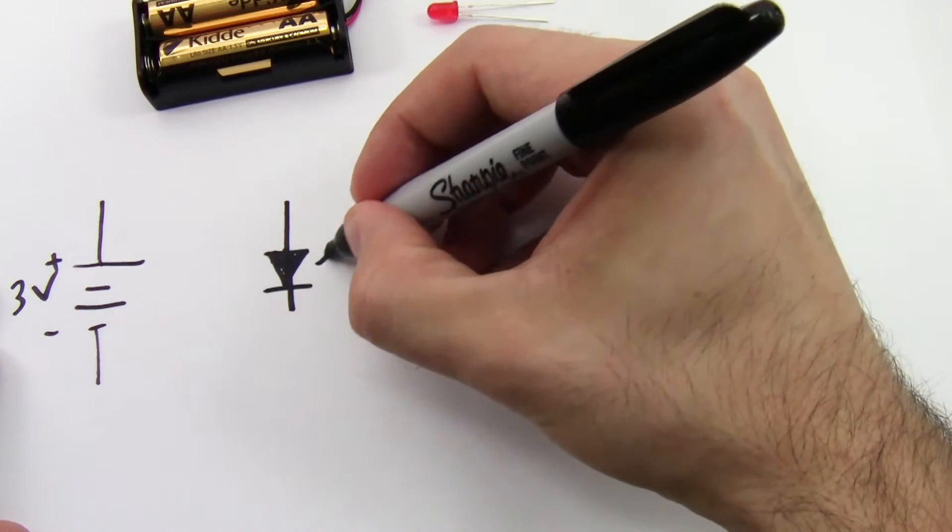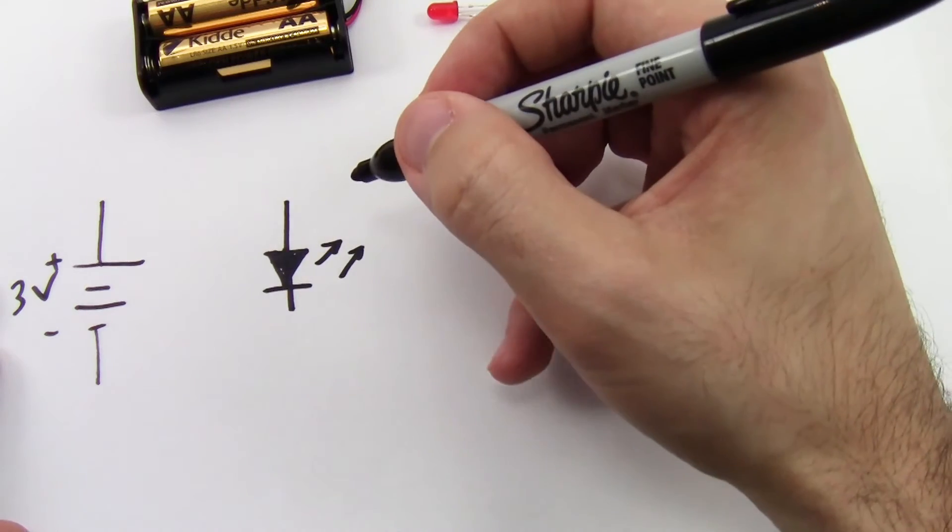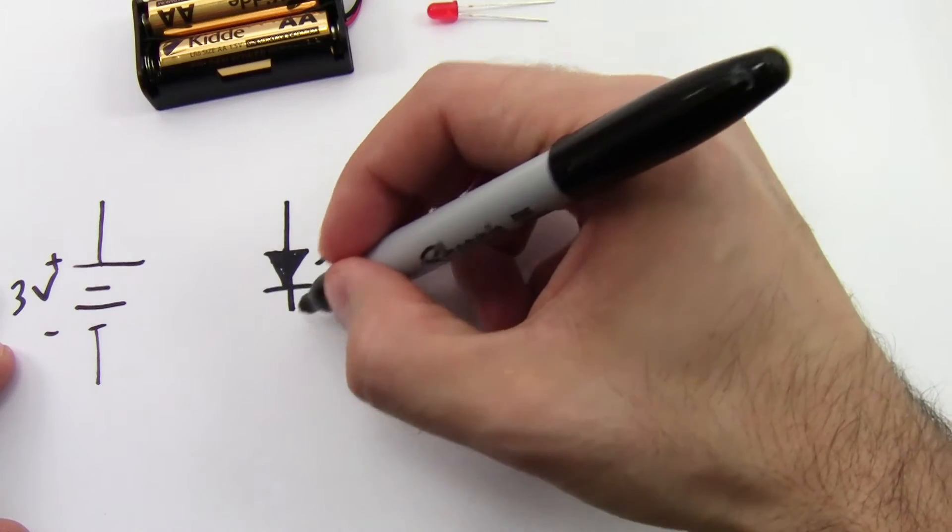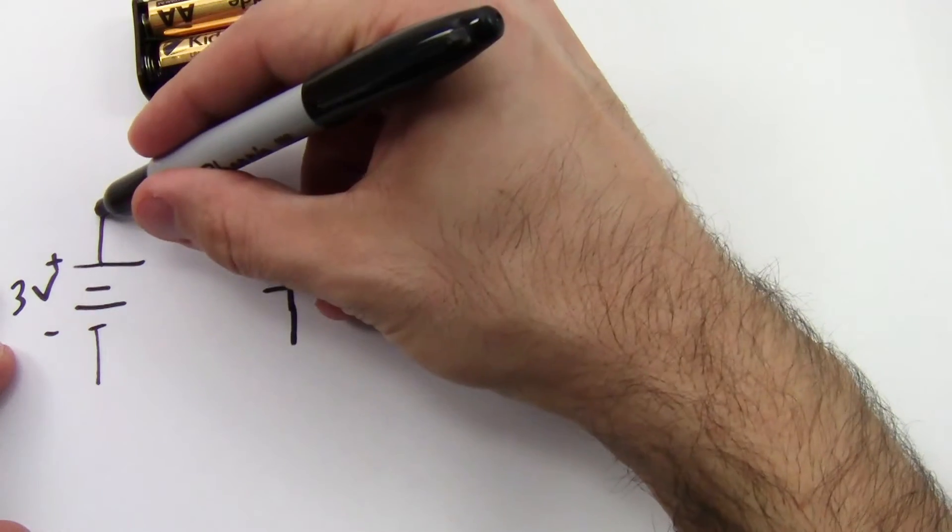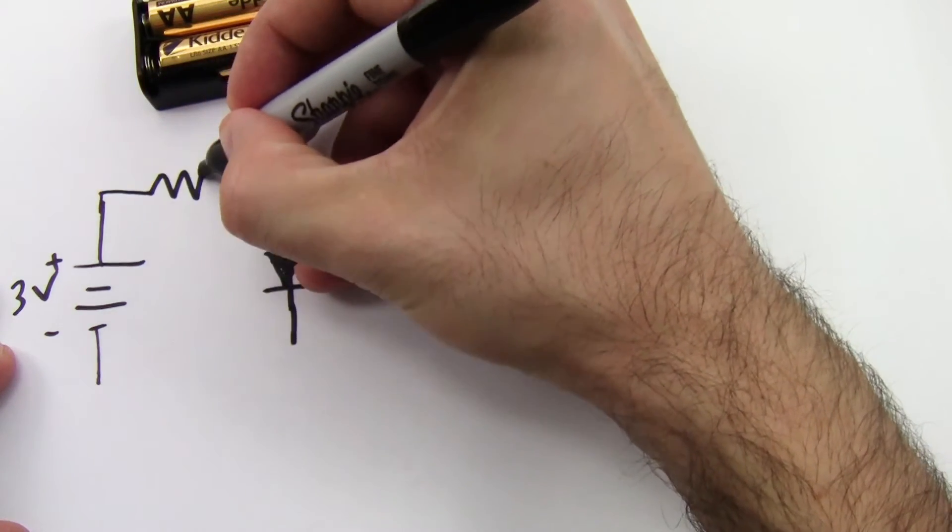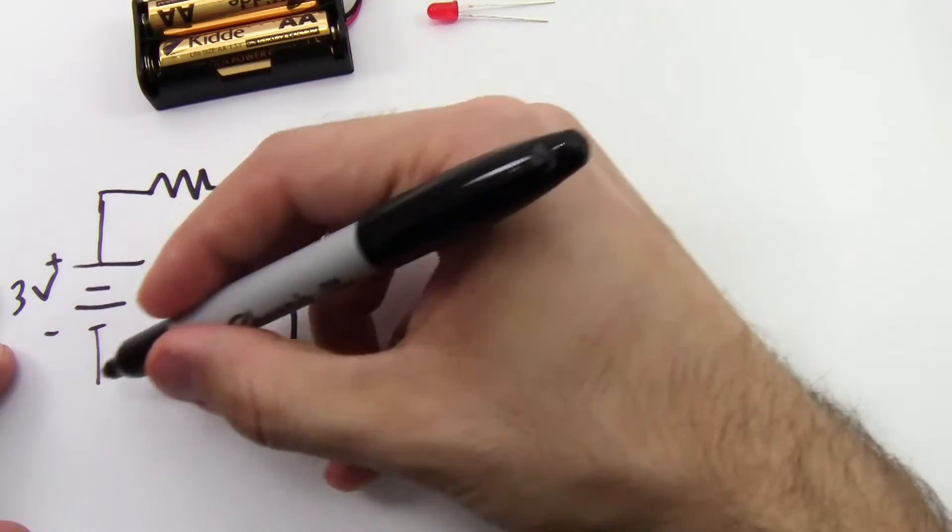I can't connect the battery pack directly to the LED or it'll have too much voltage, which will cause too much current to flow, burning the LED out. This is where my current limiting resistor comes in. I put the resistor in series with the LED.